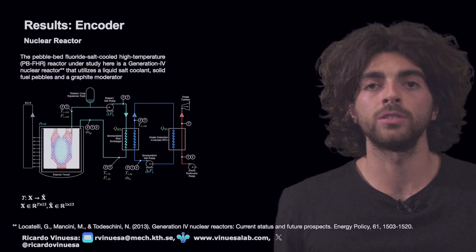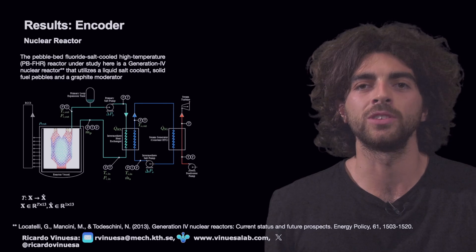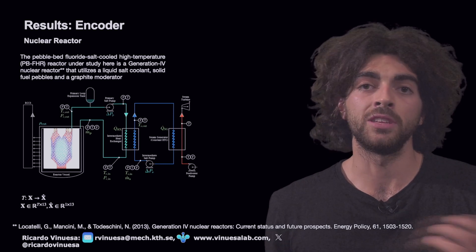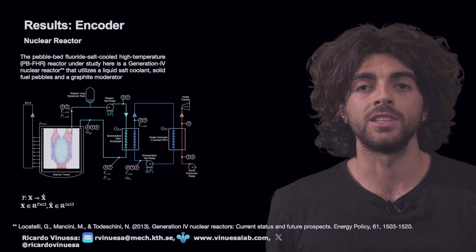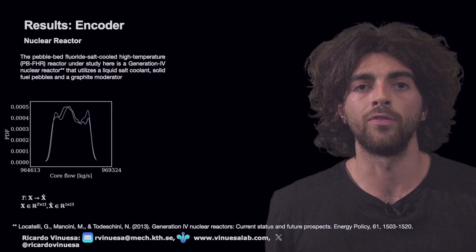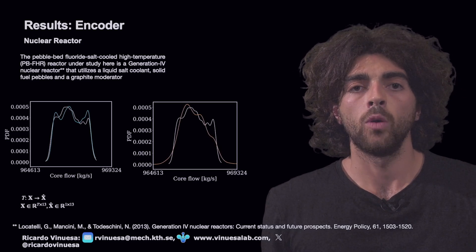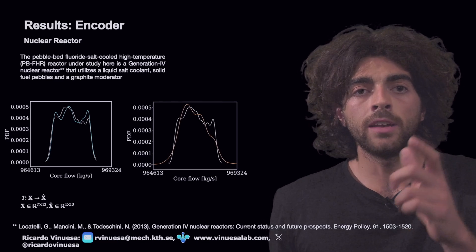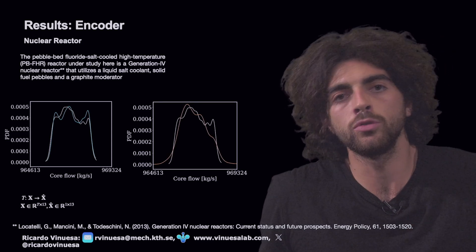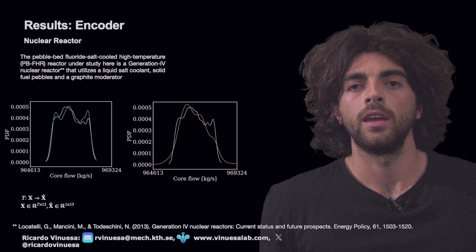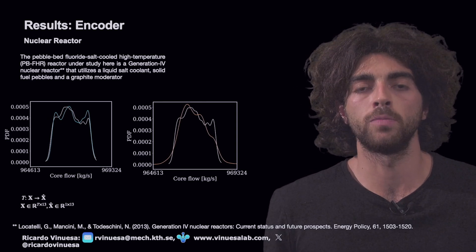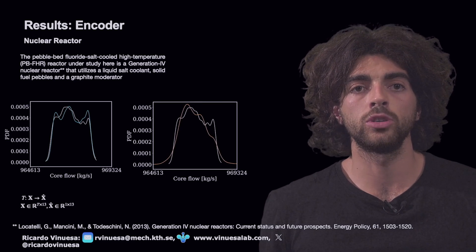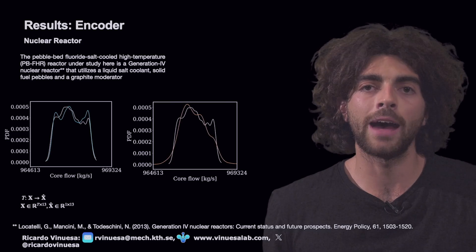Diving directly into the results, it is important not only to have a good temporal prediction of our signal but also to retrieve the main statistical properties. This signal may have different peaks on the power spectral density and different probability distributions and correlations between variables. To assess this model we first consider the probability density function of the core flow. In cyan we have the E-attention performance and in yellow the self-attention. It is clear how the self-attention is hallucinating on the tails of the distribution — creating data that is not originally supposed to be there — while the E-attention matches the tails of the distribution well, though the peaks are slightly translated.